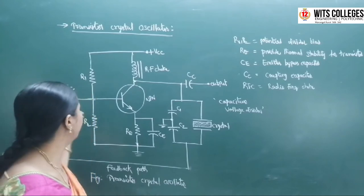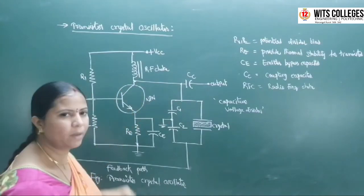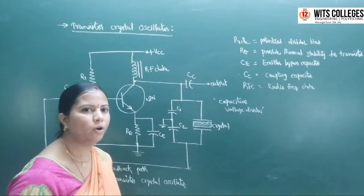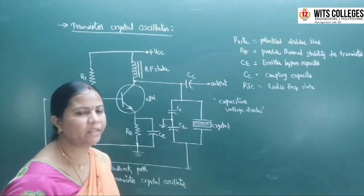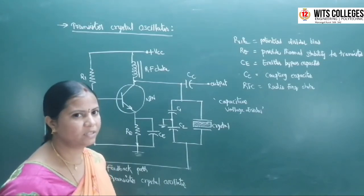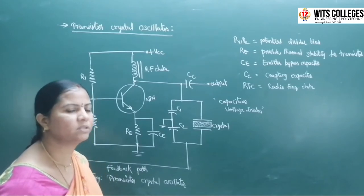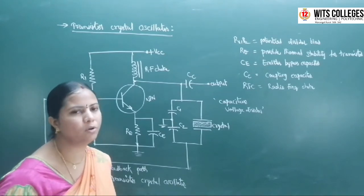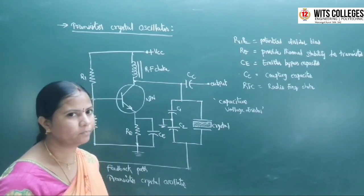Coming to the coupling capacitors — these coupling capacitors are used to allow AC signals and block the DC signal.